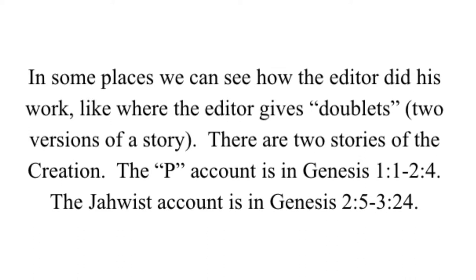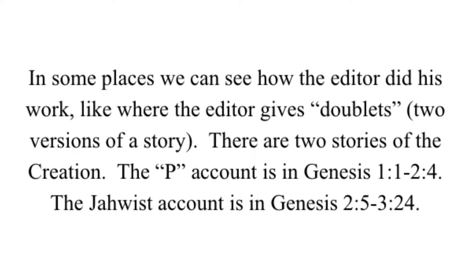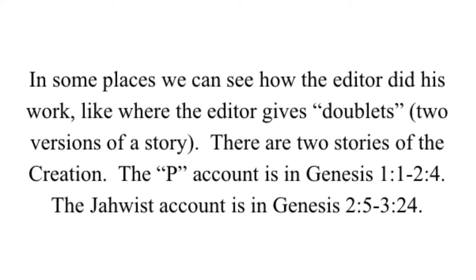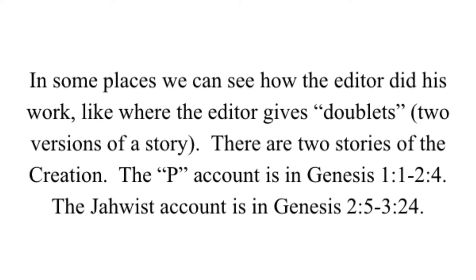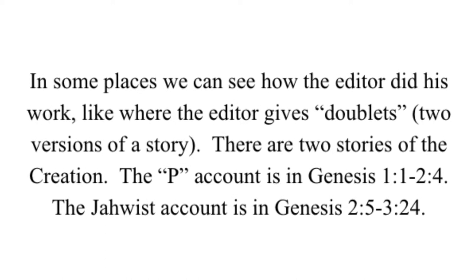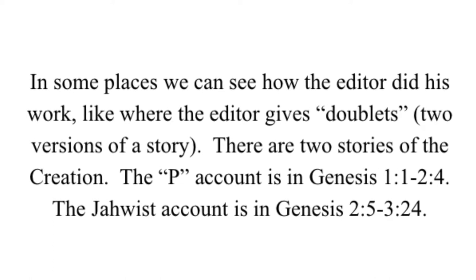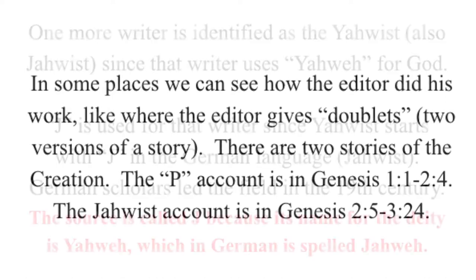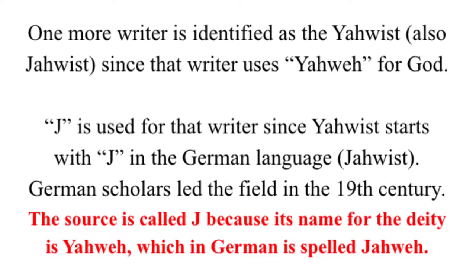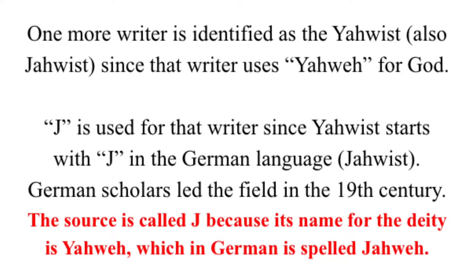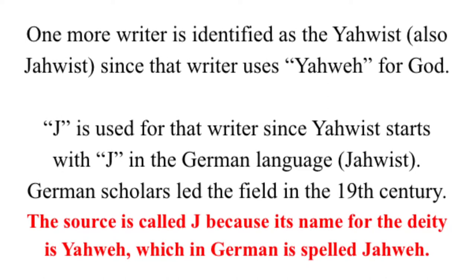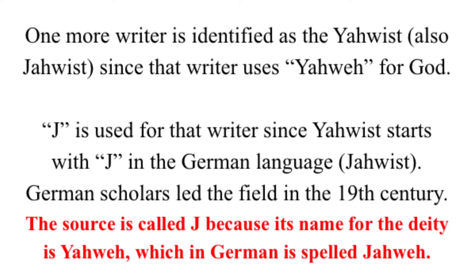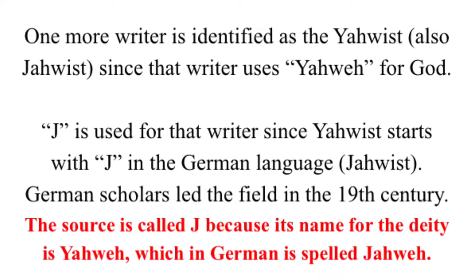In some places we can see how the editor did his work, like where the editor gives doublets — two versions of a story. There are two stories of the creation; the P account is in the first chapter of Genesis. One more writer is identified as the Yahwist, since that writer uses Yahweh for God. J is used for that writer, since Yahwist starts with J in the German language.